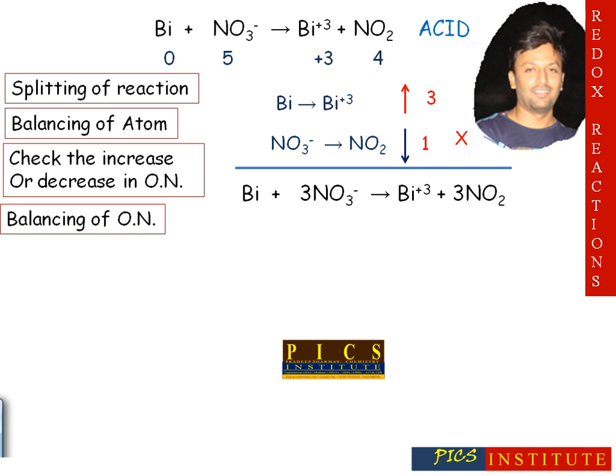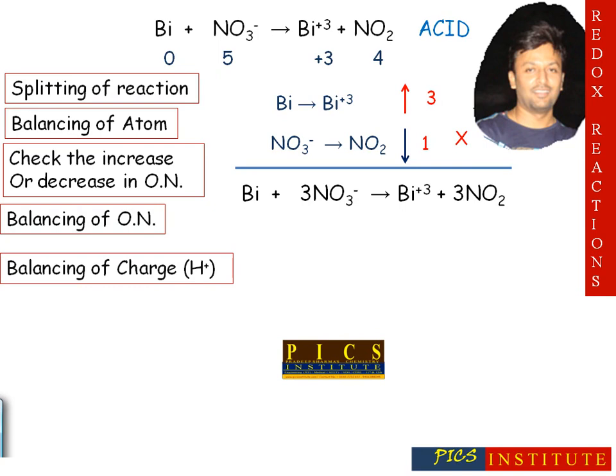Hence, multiply equation number two by three. After solving, we get the equation with Bi³⁺ plus 3NO₂. The next step is balancing of charge. Since the reaction is in acidic medium, charge will be balanced by H⁺ ions. Check the charge present on both sides: on the left-hand side it is −3, on the right-hand side it is +3, so the difference is six units.